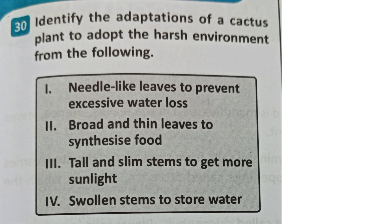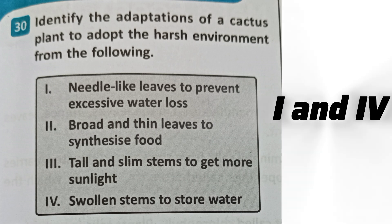Next question: Identify the adaptations of a cactus plant to adopt the harsh environment. Options: needle-like leaves; needle-like leaves to prevent excessive water loss and solid stem to store water; broad and thin leaves to synthesize food; tall and slim stem to get more sunlight. The correct answer is B - first and fourth adaptations help cactus survive in harsh environments.